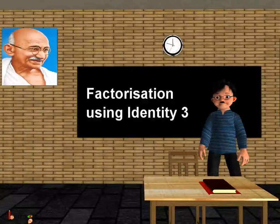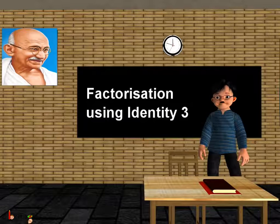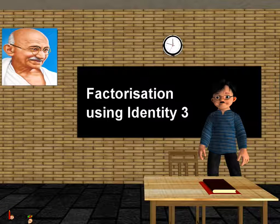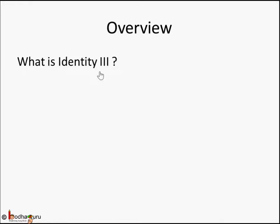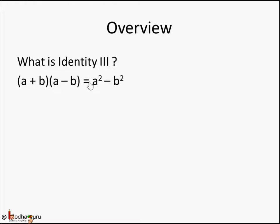Hello children. In this lesson we are going to learn how to do factorization of algebraic expressions using Identity 3. First let's revise what Identity 3 is: (a + b)(a - b) = a² - b².